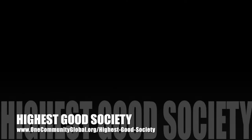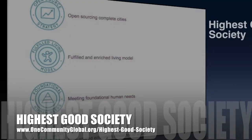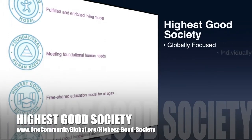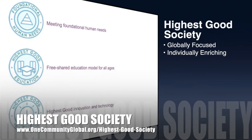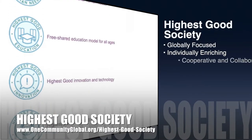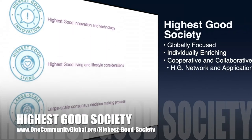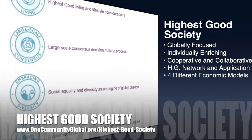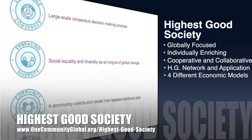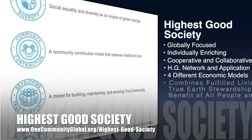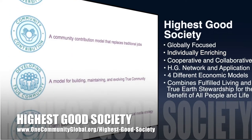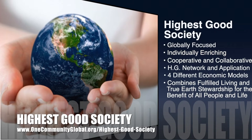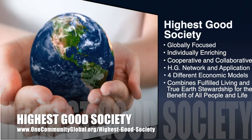The One Community approach to Highest Good Society is globally focused, individually enriching, cooperative and collaborative, includes a Highest Good network and application, four different economic models, and combines fulfilled living and true earth stewardship for the benefit of all people and all life on this planet.